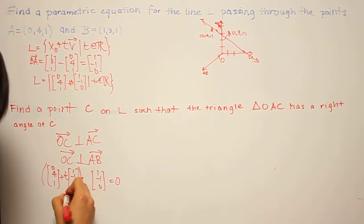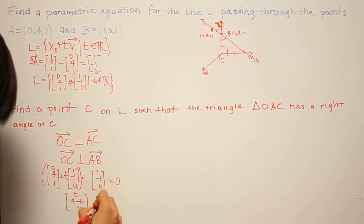So if we expand this out, we get (t, 4 - t, 0) dot (1, -1, 0) equals 0.